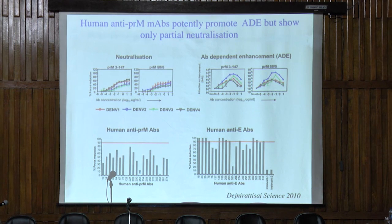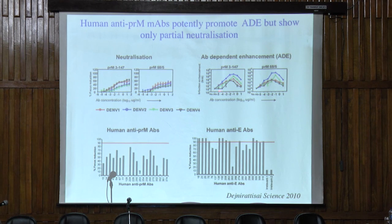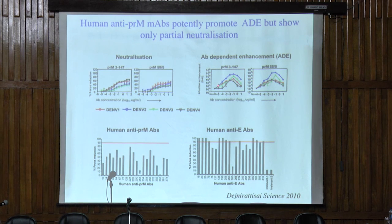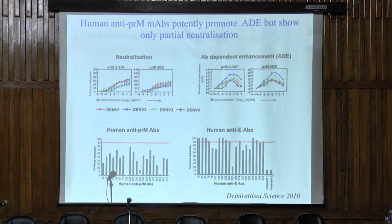This is the classic antibody-dependent enhancement assay. If you add increasing concentrations of antibody to the virus before placing it onto an Fc-receptor-expressing cell line — in this case a monocyte cell line U937 — you see very low infection without antibody. As you add increasing amounts of antibody, it increases infection of these cells by many logs, and then at higher concentrations it suppresses. So these pre-M antibodies are poor at neutralizing but can all cause antibody-dependent enhancement.